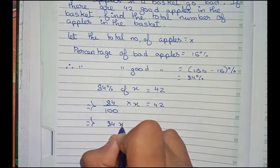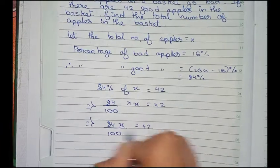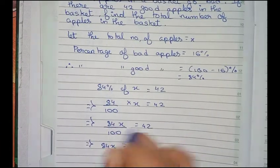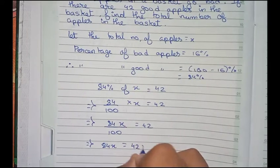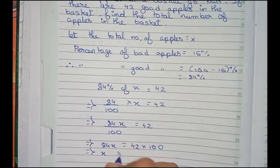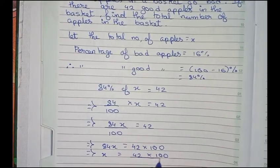Or you can write 84x by 100 equals to 42. Or you write 84x. Now you are taking 100 to this side so it will go for multiplication, 42 into 100. Now x equals to 42 into 100 by 84.